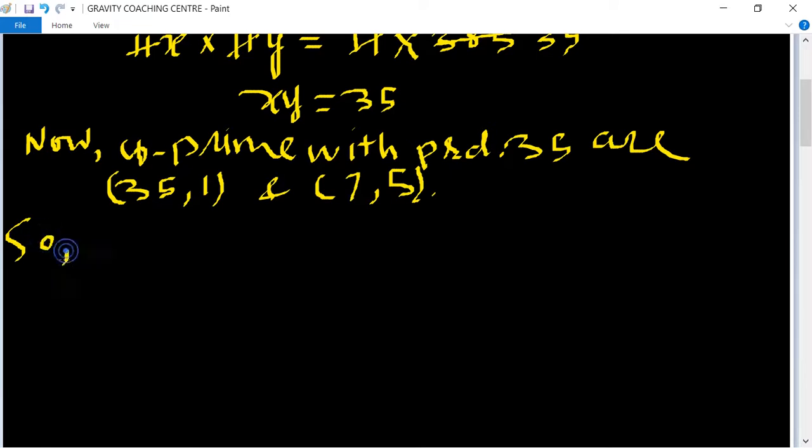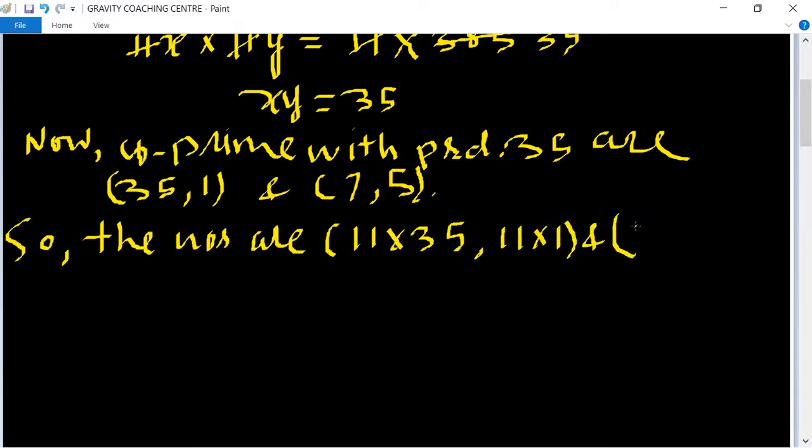So the numbers are: 11 into 35 comma 11 into 1, and 11 into 7 comma 11 into 5.